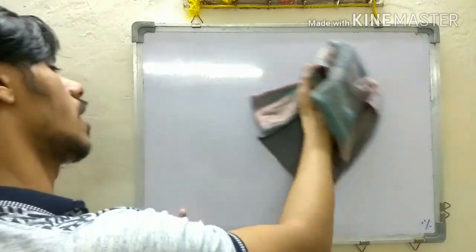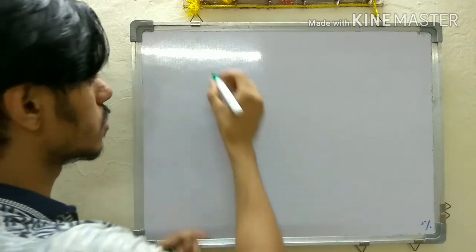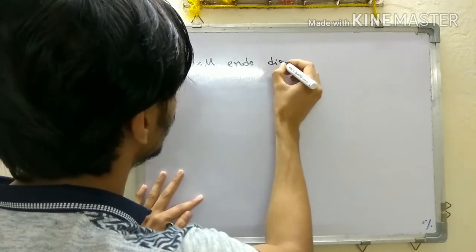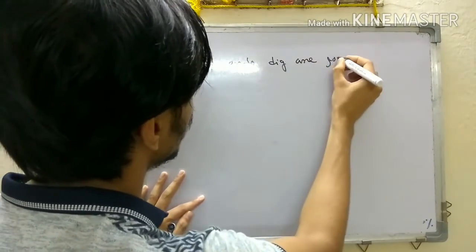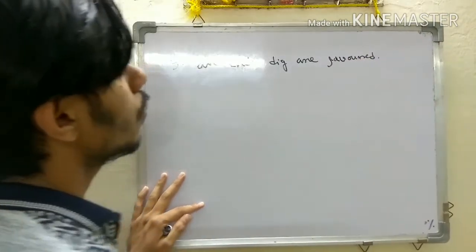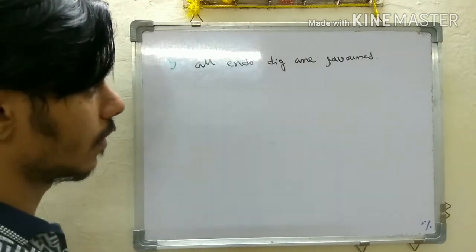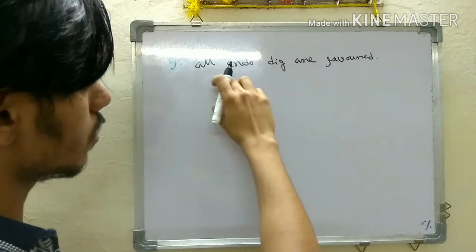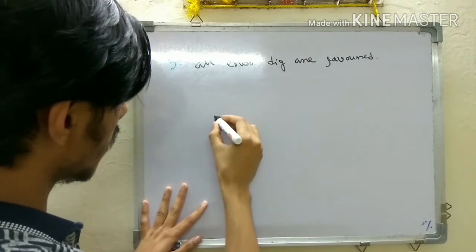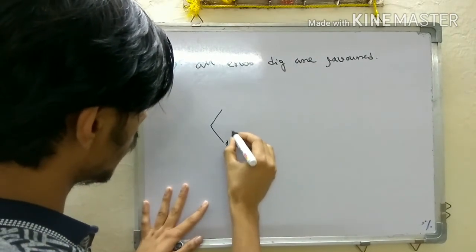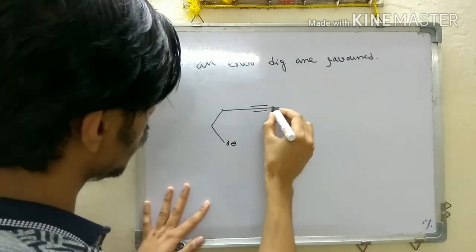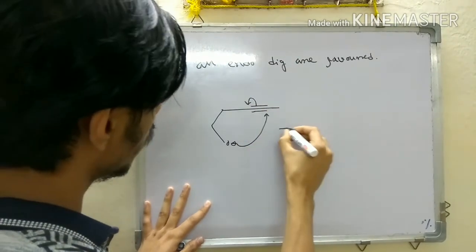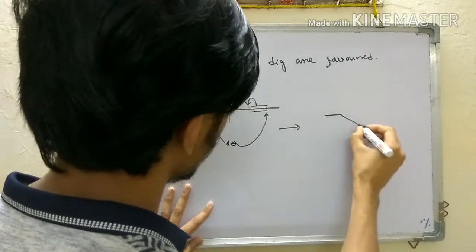The last rule in this class is that all endo-dig reactions are favored. This is a puzzling rule because most endo-trig reactions are disfavored, yet here all endo-dig are favored. So if you have an O-minus and a triple bond in a five endo-dig arrangement, the rule says attack will occur at the internal carbon.